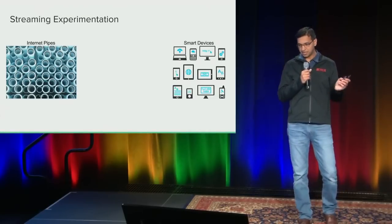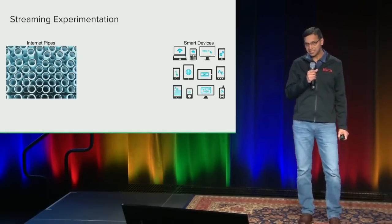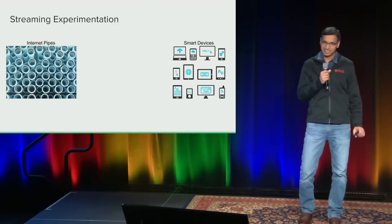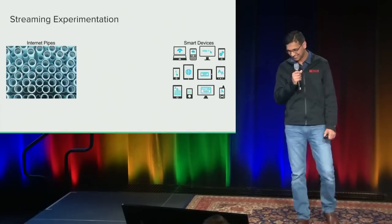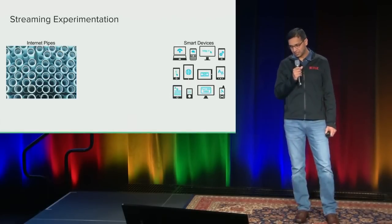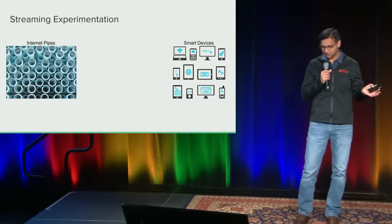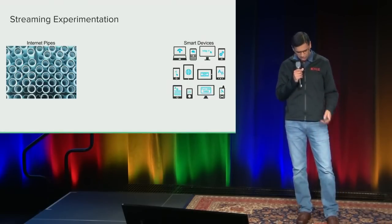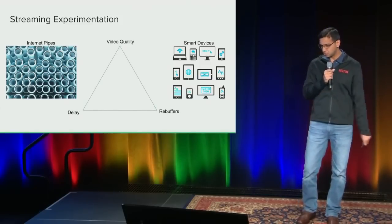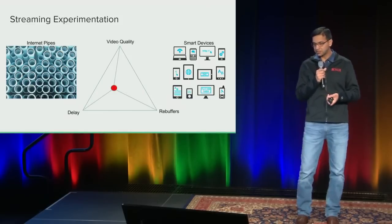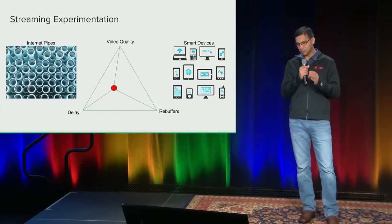A little bit about the streaming experimentation itself. Metaphorically speaking, the Internet is built out of pipes of different sizes delivering data at varying rates. Sometimes same-sized pipes can deliver data at fluctuating rates, like the Internet connection at my home. At the other end of these pipes are a plethora of smart devices with a spectrum of capabilities. Our job at Netflix is to balance the video experience triangle across video quality, rebuffers, and delay — though if you talk to streaming experts, they will probably draw a polygon with multiple vertices.